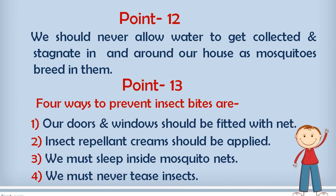The next point is about the four ways to prevent insects bites, how we can prevent the insects bites. So one by one we will discuss. The first one is that our doors and windows should be fitted with net, so how they will come?